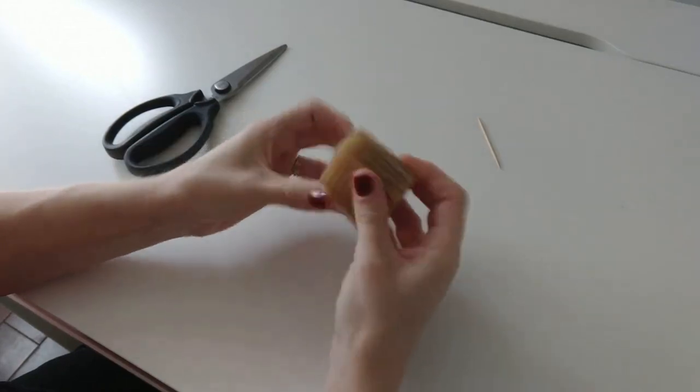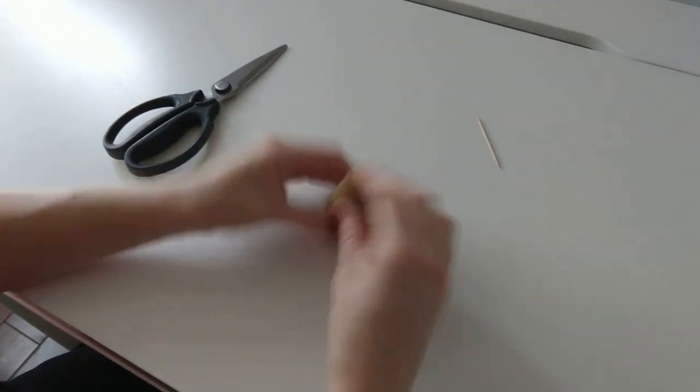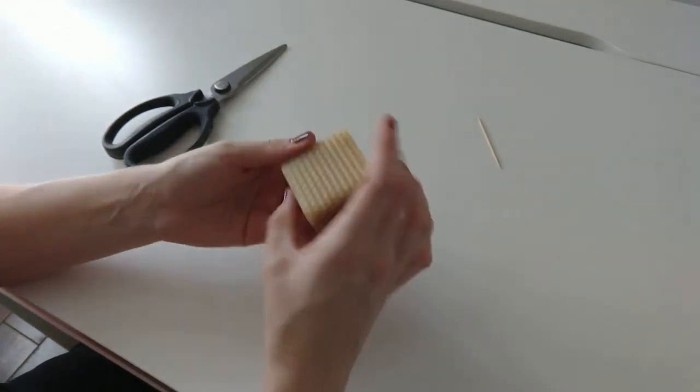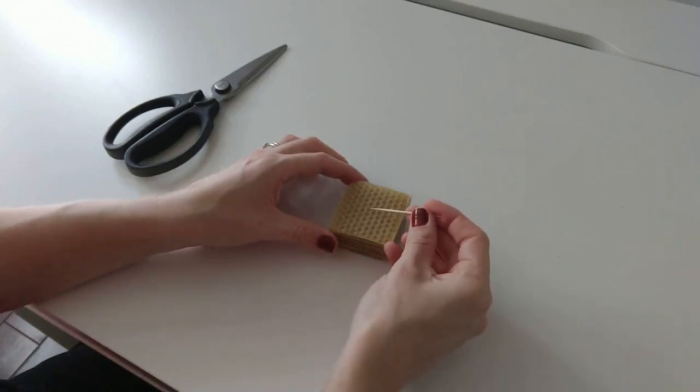Once you've finished your little shape tower, press it down a little bit. Take your toothpick and make a hole in the center all the way through the candle.